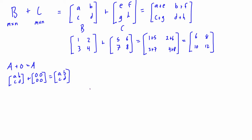We also need to talk about undefined solutions to matrix addition. If we have a 2 by 2 matrix like 2, 1, 3, 4 and try to add it to a 2 by 3 matrix like 1, 2, 3, 4, 8, there is no solution. If you try to add a 2 by 3 and a 3 by 2 — anything not exactly the same number of rows and columns — you can't do it element-wise, because one matrix has an element in the first row and third column that the other doesn't.